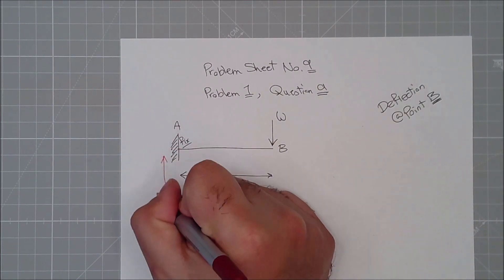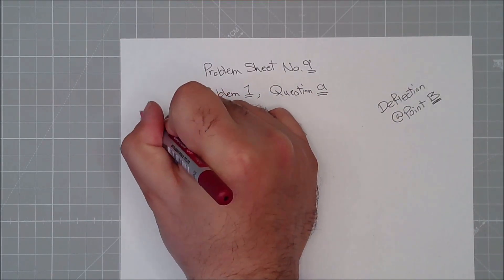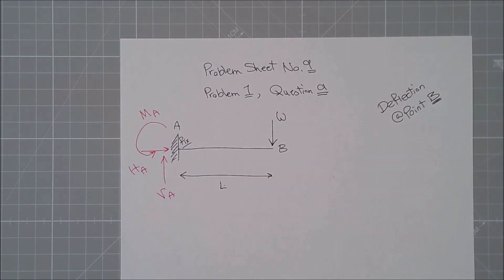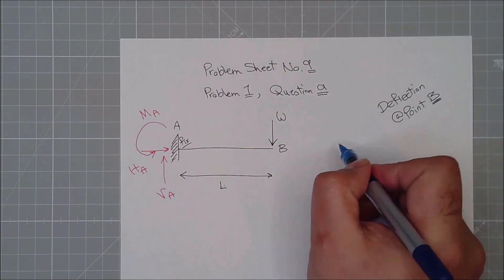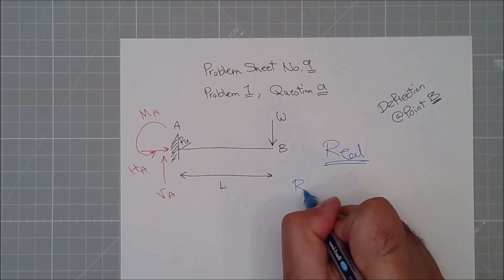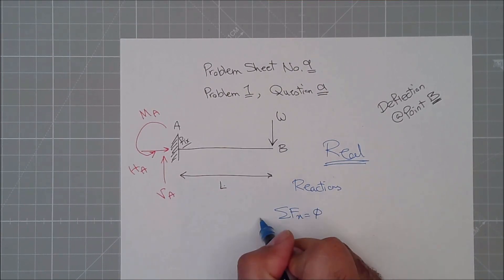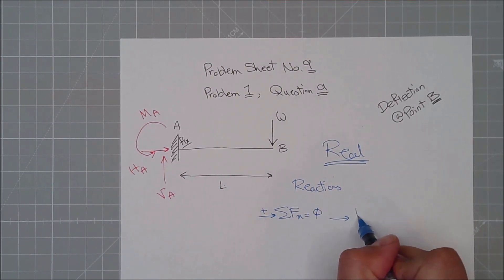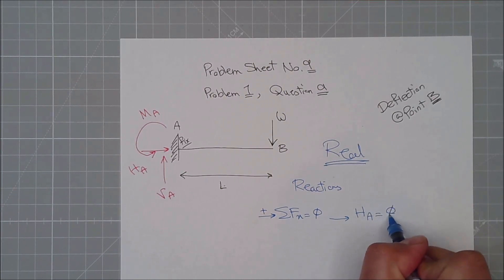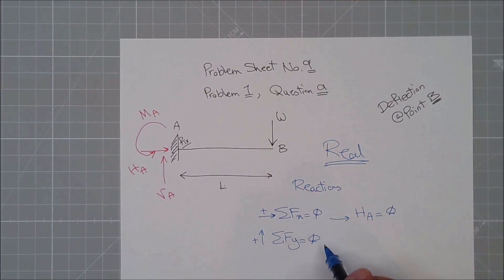Let's quickly do this through virtual work. I have VA, HA, and a moment MA — these are the reactions due to the fixed support. These are all under the real case. Summation of all forces in the x-direction equals zero, so HA equals zero. Summation of all forces in the y-direction equals zero, going upward as positive, so VA equals W.